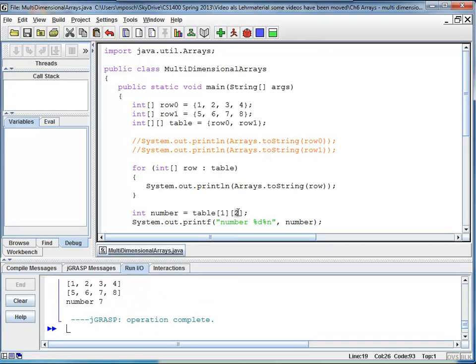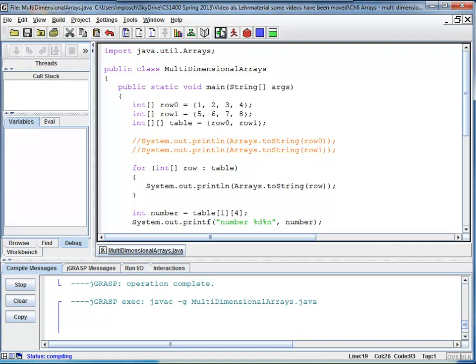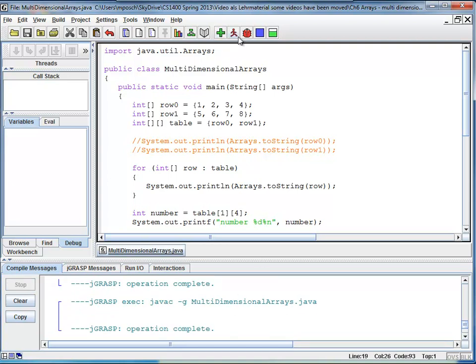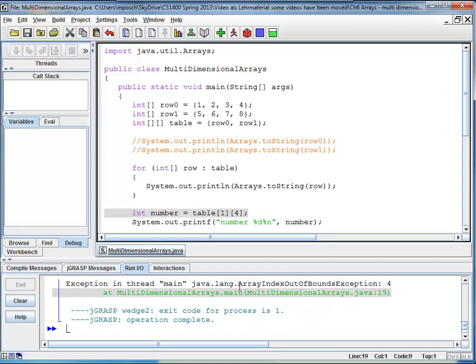And if I would take some other index, let's say I want to have the fourth element, but I forget to consider that indices start at 0, it still compiles. But when I run it, I will get an array index out of bounds exception.